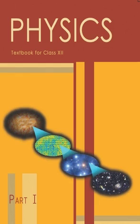How did we go from rubbing amber to understanding that there are different types of charges? Through lots of experiments, scientists observed that charges come in two types: positive and negative. They interact in a very predictable way — opposites attract and like charges repel. It's just like magnets: a north pole will always attract a south pole, but two north poles will push each other away.